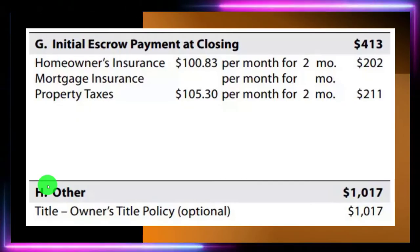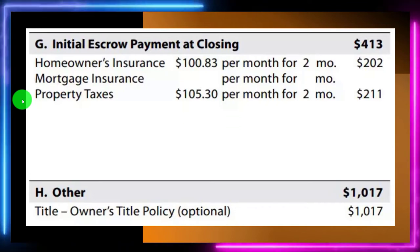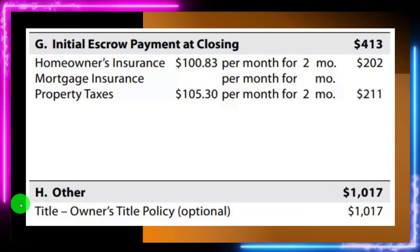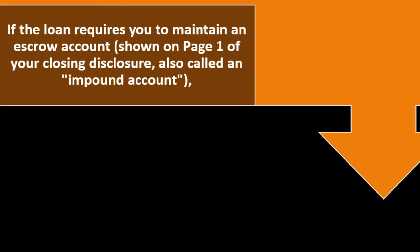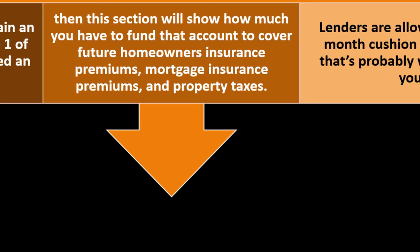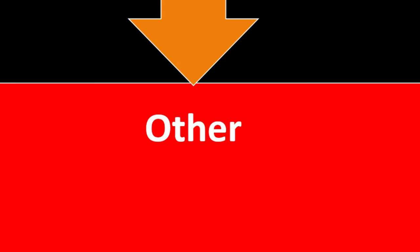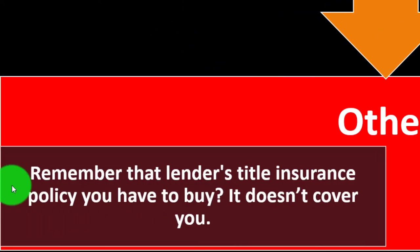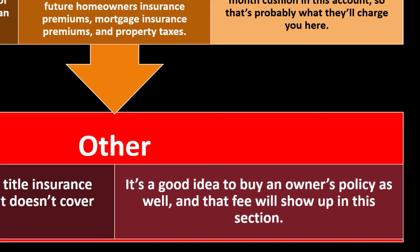Section G covers the initial escrow payment at closing: homeowners insurance, mortgage insurance, and property taxes paid monthly into escrow. If the loan requires you to maintain an escrow account — also called an impound account — this section shows how much you need to fund it to cover future insurance premiums, mortgage insurance, and property taxes. Lenders are allowed to keep a two-month cushion in this account. Section H is the title owner's total policy. Remember, the lender's title insurance policy doesn't cover you; it's a good idea to buy an owner's policy as well.